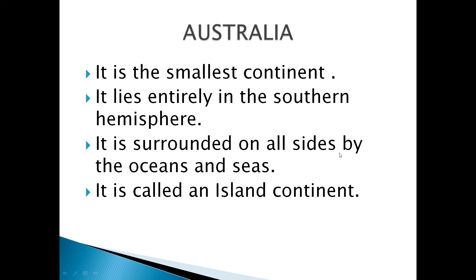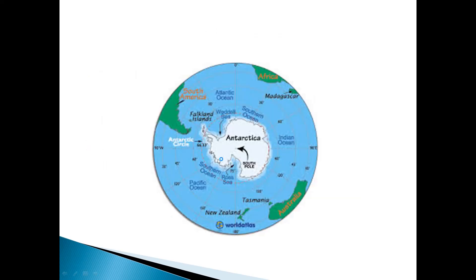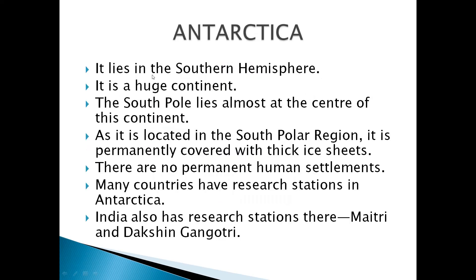Australia is the smallest continent and lies entirely in the southern hemisphere. It is surrounded on all sides by oceans or seas, so we call it the island continent. Antarctica lies completely in the southern hemisphere — it is a huge continent and the South Pole lies almost at its center. As it is located in the south polar region, it is permanently covered with thick ice, and there are no permanent human settlements.